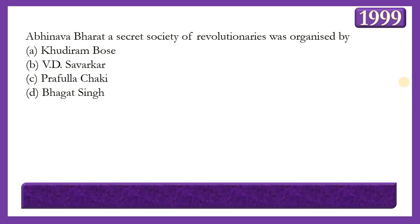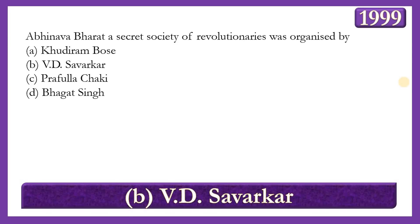Next question: Abhinav Bharat, a secret society of revolutionaries, was organized by whom? Options: Khudiram Bose, Veer Savarkar (Vinayak Damodar Savarkar), Prafulla Chaki, or Bhagat Singh. The answer is option B — Veer Savarkar. The Abhinav Bharat Society, also known as Young India Society, was founded by Vinayak Damodar Savarkar and his brother Ganesh Damodar Savarkar, and was founded in the year 1904.